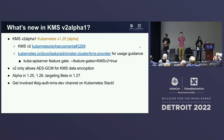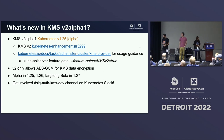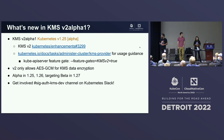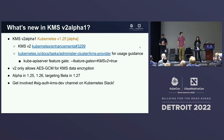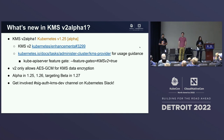We're introducing KMS V2 alpha 1, which went into alpha in 1.25. If you want to check it out, the KEP is there as well as usage guidance in the Kubernetes docs website. To use this feature, you enable the API server feature gate for KMS V2. This comes with GCM by default. It's alpha in 1.25 and 1.26, and we're hoping to target beta in 1.27. If you want to get involved, please join the SIG auth KMS dev channel on Kubernetes Slack.